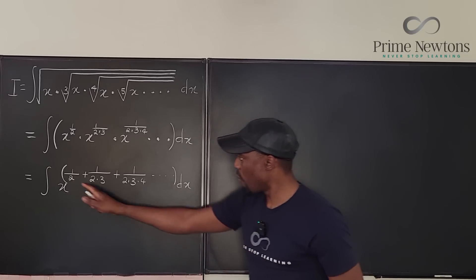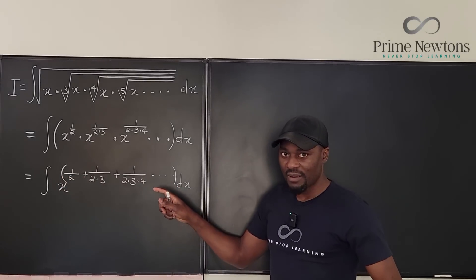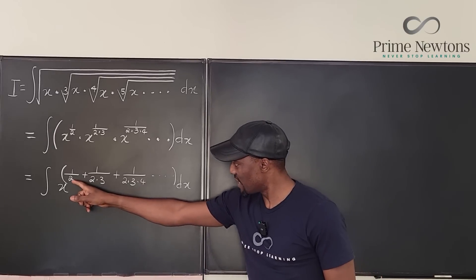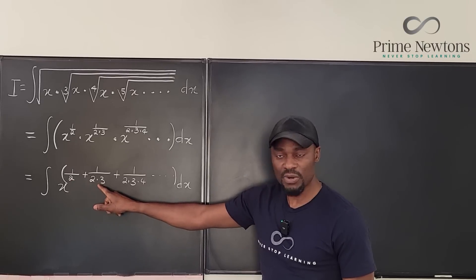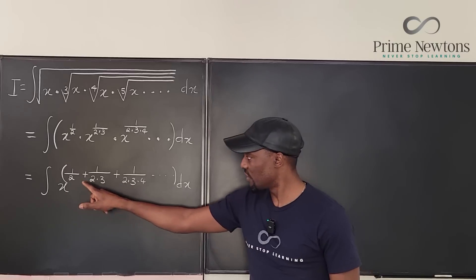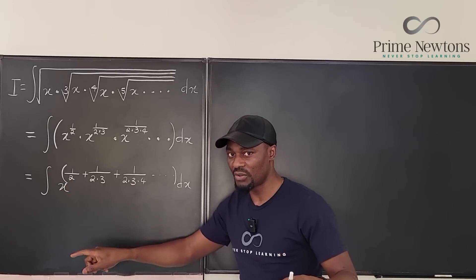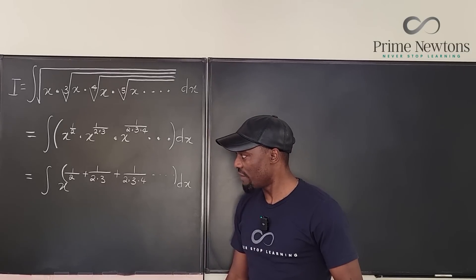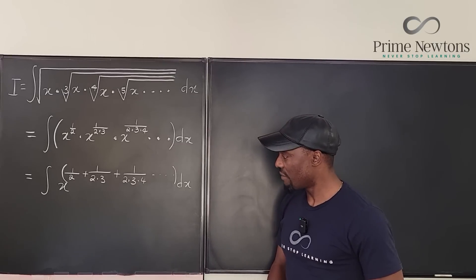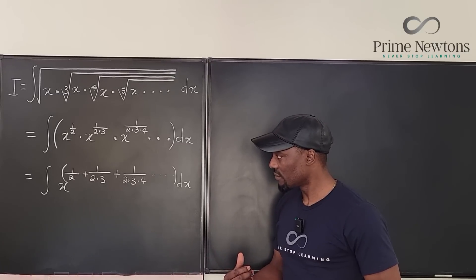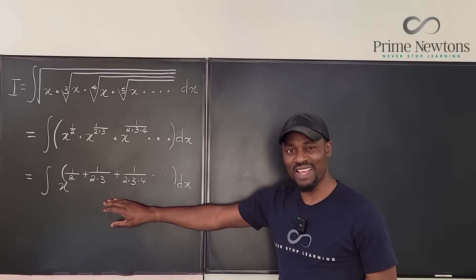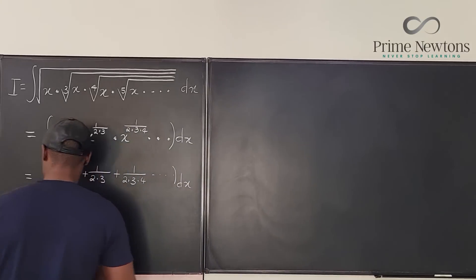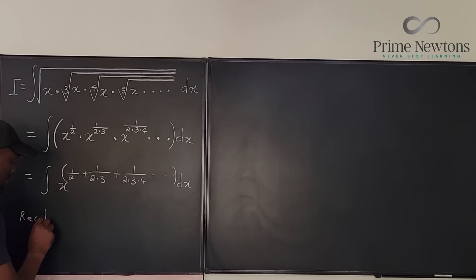This is where your previous knowledge will have to count. We know that these denominators are factorials: 2 factorial, 3 factorial, 4 factorial. We just don't have 1 factorial and 0 factorial in the denominator. So it's more like we have the entire factorial series but missing those first two terms — and that's what we need to figure out.